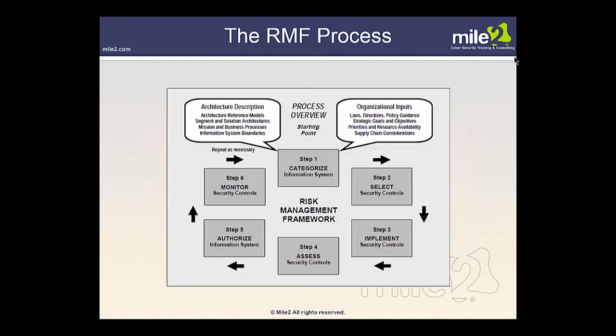So here is the risk management framework overview that we've looked through. As we go through this course, we'll see each of these six steps in much deeper detail: Step 1 — categorize the information system; Step 2 — select security controls; Step 3 — implement security controls; Step 4 — assess security controls; Step 5 — authorize the information system; Step 6 — monitor security controls. The chapters to come will go into each of these in detail.